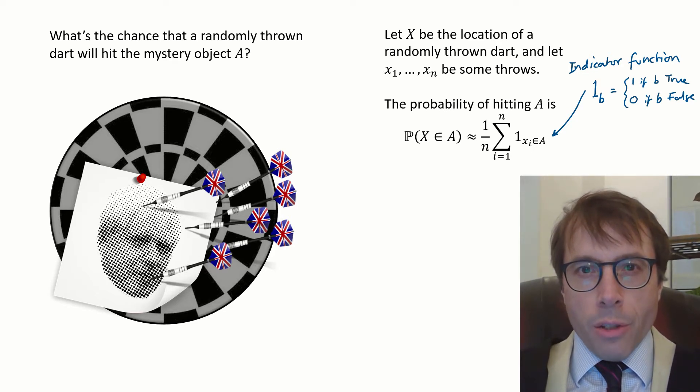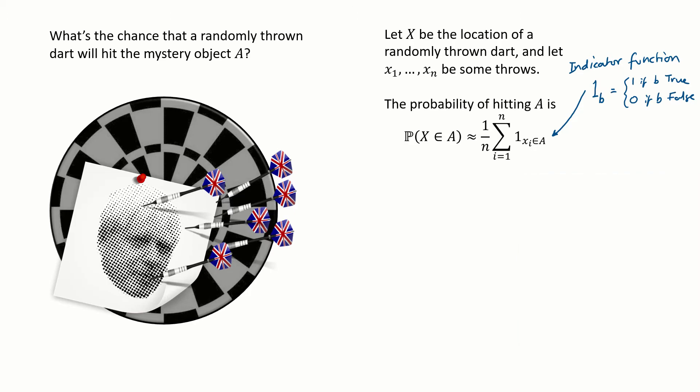Indicator functions are really useful for turning Boolean conditions into algebra that you can do maths with. Because they're random samples they may or may not be representative, which is why I've written probability that x in A is approximately this average.